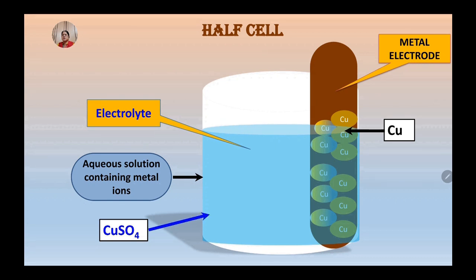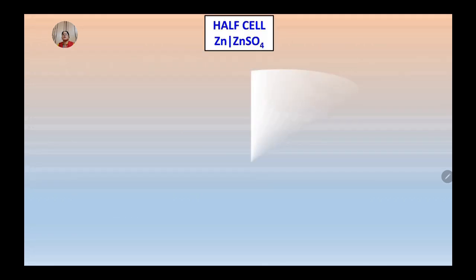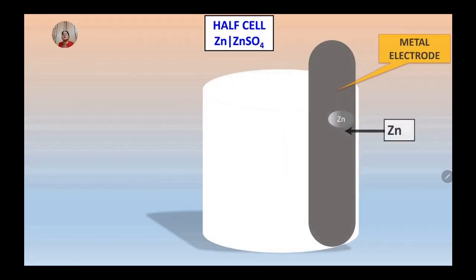Here we see another half cell which contains zinc as electrode and zinc sulphate as an electrolyte. So this is zinc electrode made of zinc atoms dipped in an electrolyte containing zinc plus two ions, that is zinc sulphate solution.